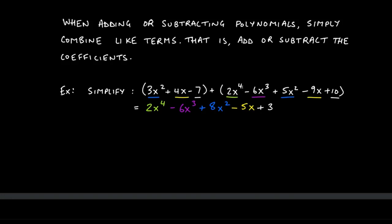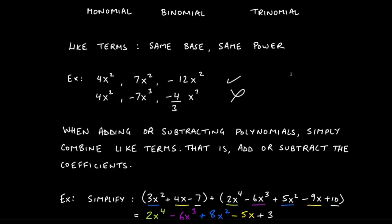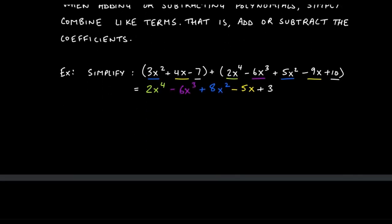For example, simplify 3x squared plus 4x minus 7, plus 2x to the fourth minus 6x cubed plus 5x squared minus 9x plus 10. I recommend color-coding: underline terms to draw your attention to like terms. Start with the highest power, which is 2x to the fourth. I look through the rest of the problem for other x to the fourth terms — there are none — so I just write down 2x to the fourth.